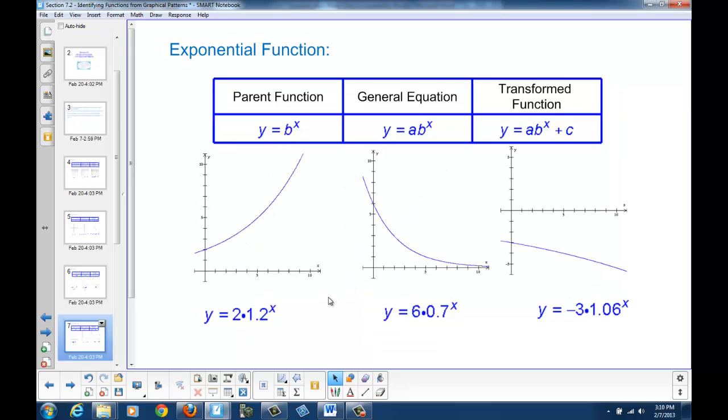Our last graph is the exponential function. And here, the graph is y equals b to the x. Notice how the x is in the exponent. The general equation allows dilations, y equals ab to the x. And the transformed function would be ab to the x plus c.